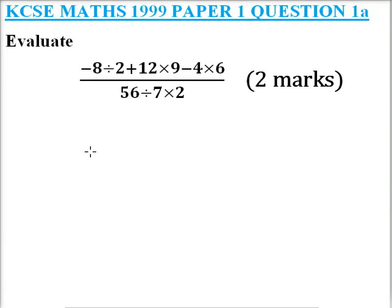1999 paper 1 question 1a. We are taught to evaluate this: minus 8 divided by 2 plus 12 times 9 minus 4 times 6, all over divided by 56 times divide by 7 times 2.